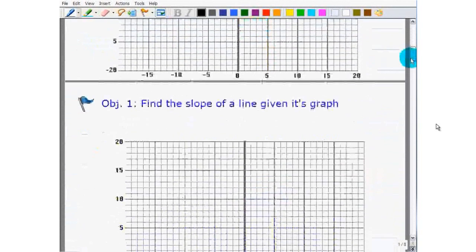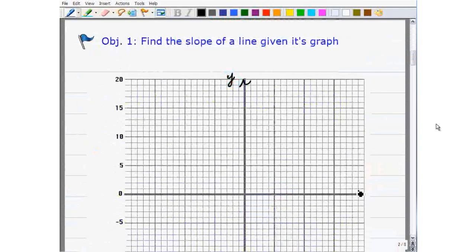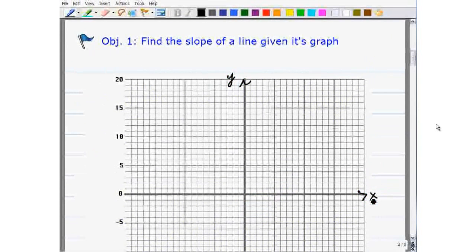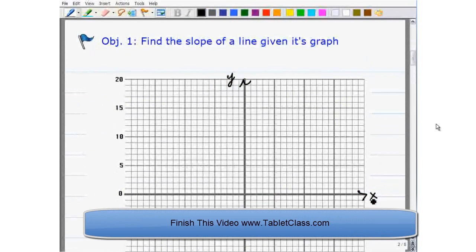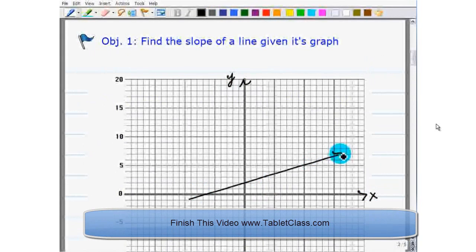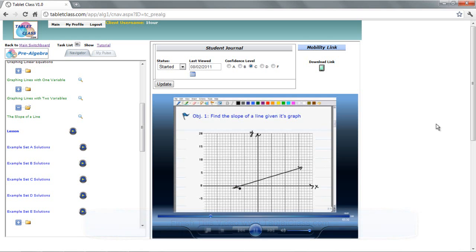Okay, so let's go down to this particular problem. Let's draw ourselves a line. It's going to find the slope of a line given its graph. So let's draw another line here. So let's suppose we had this line here. Now, if you think you can figure this out, I'd say go for it. Go ahead and pause it.